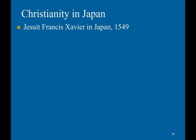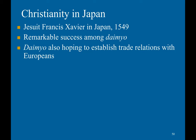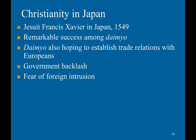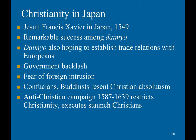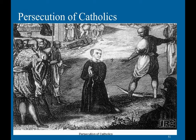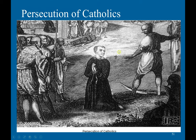The Jesuit Francis Xavier landed in Japan in 1549 and had remarkable success among the daimyo, who were hoping to establish trade relations with Europeans. However, there was a government backlash, just as we saw in China. There was fear of intrusion, and Confucianists and Buddhists resented Christian absolutism. An anti-Christian campaign was waged from 1587 to 1649, restricting Christianity and executing staunch Christians, sometimes by crucifixion.